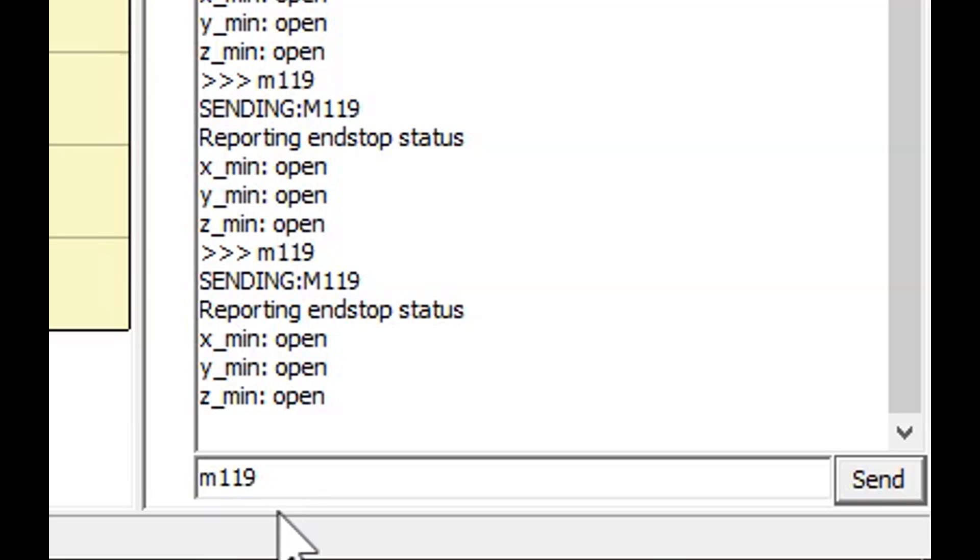When testing the inductive probe, you can use the G-code command M119 to check the status of the end stops. By default, the end stop should be open if it's not sensing metal and it should be triggered if it is sensing metal.